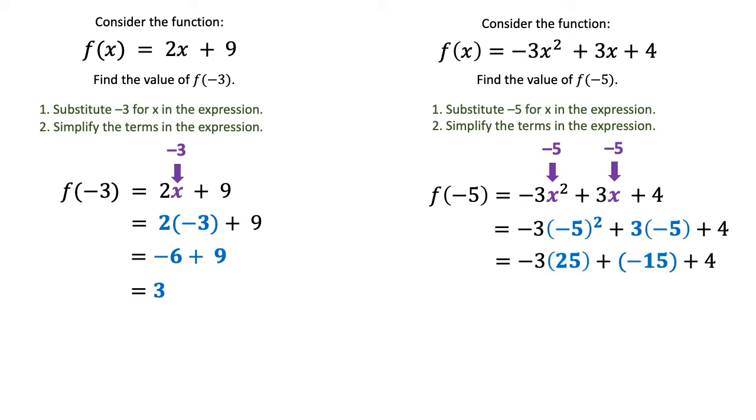That's going to give us -3 times 25, which is -5 squared, then plus -15, which is 3 times -5, and then plus 4.